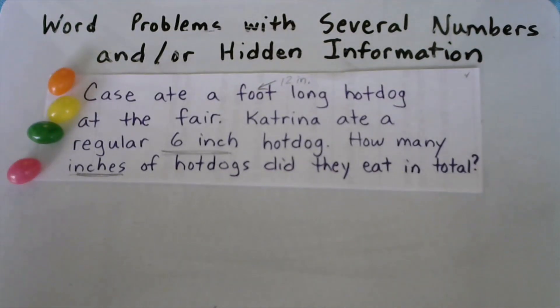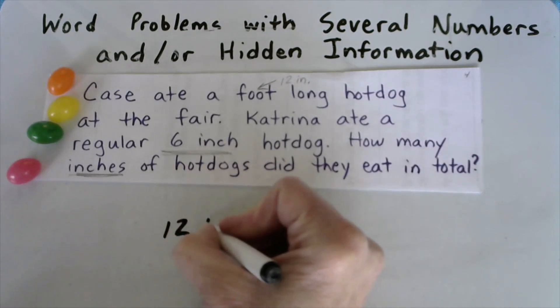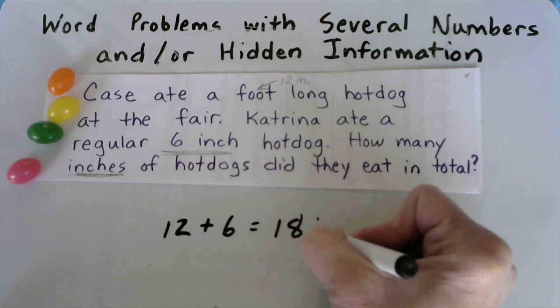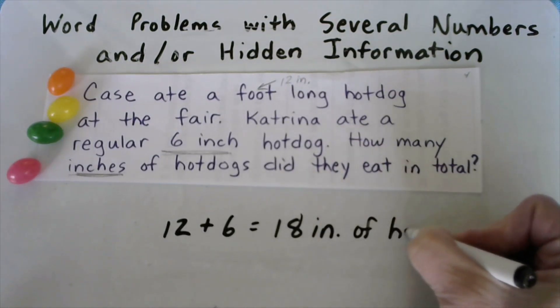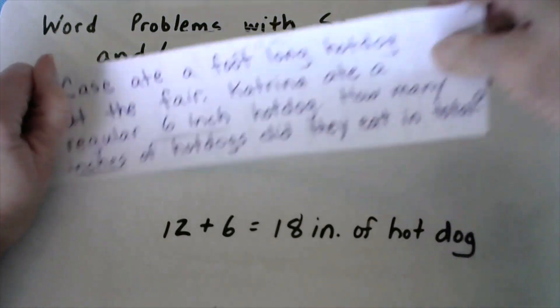Now that was really quite easy, wasn't it, once you knew where the hidden number was because it was just 12 plus 6 equals 18 inches. Or you could say 18 inches of hot dog. Let's move on really fast before this storm comes.